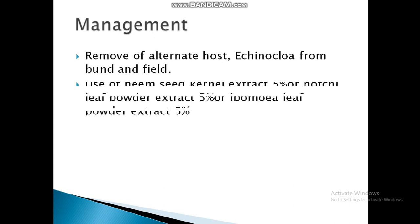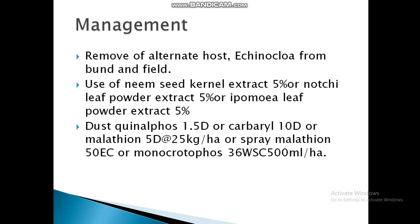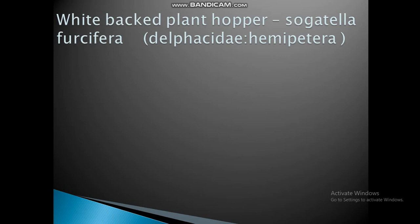Management: remove alternate hosts, no stubble from the bund and field. Use neem seed kernel extract 5%, neem leaf powder extract 5%, or IPM neem leaf powder extract 5%. Dust with carbaryl 1.5D or malathion 5D at 25 kg per hectare, or spray malathion 50 EC or monocrotophos 36 SL at 500 ml per hectare.